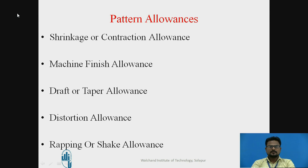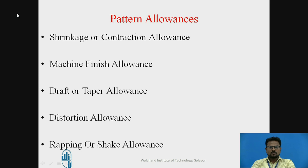The next allowance is Draft Allowance, also called taper allowance. Draft allowance is the taper provided on the pattern surface to allow its withdrawal without damaging the mold surface. If the pattern surface is straight, it is difficult to withdraw the pattern from the mold, and there is a high chance of mold surface damage due to friction between the mold and the pattern. Mold damage is more severe at the corners near the parting surface. Hence, draft is provided on the vertical surfaces of the pattern. For hand-drawn patterns, about 10 to 20 mm draft per metre is provided; for machine-drawn patterns, about 1 degree is provided.